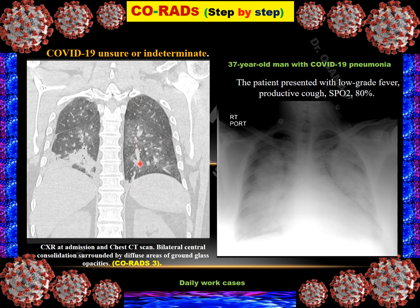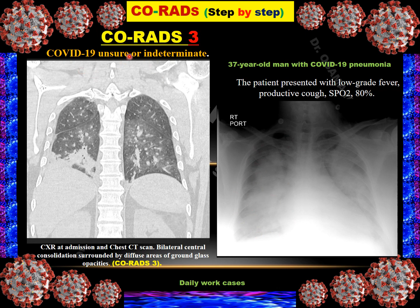Case 6: Ground glass opacity distributed in the perihilar distribution and center. The fissures and pleural surface appear clear. The frontal chest radiograph shows consolidations in the paracardiac distribution with the peripheral area appearing spared. The presence of perihilar distribution of the ground glass opacity makes this CO-RADS 3 — unsure or indeterminate. RT-PCR test for this patient was negative.